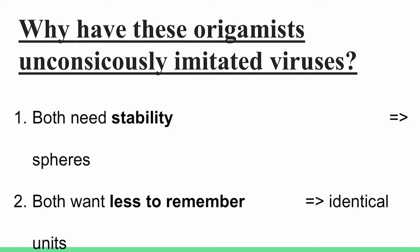That doesn't get you all of the way towards them having so much in common. Here's point number two. Both of them want less to remember. Now, what do I mean by that? Well, if you're an origamist, you want to have fewer instructions because it's easier to remember. That just feels a little bit nicer. And so it's a quite good strategy to make a nice big model out of one piece. The one piece only has a few instructions, and you get something that looks complicated.